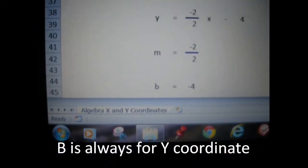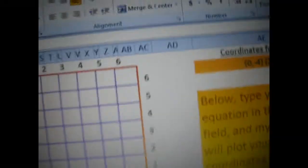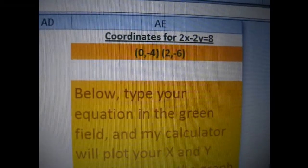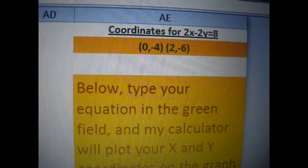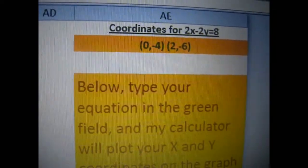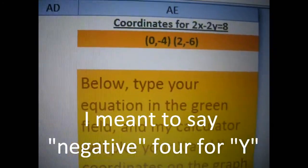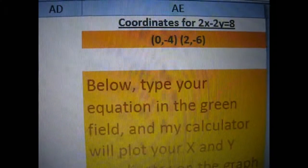Now, we need to go back up here. The coordinates plot for you, basically the coordinates would be two coordinates. The first one would be 0 for x and 4 for y and the next coordinate would be 2 for x and negative 6 for y.